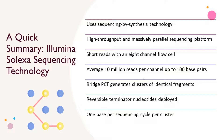Illumina Solexa sequencing technology is deployed in the Illumina Genome Analyzer, a high-throughput, short-read, massively parallel sequencing platform. It uses sequencing by synthesis on an eight-channel flow cell to produce more than 10 million reads per channel with read lengths up to 100 base pairs. Individual fragments of a genomic DNA library are amplified on the flow cell via bridge PCR to generate clusters of identical fragments. Reversible terminator nucleotides are used, allowing the reading of one base per sequencing cycle per cluster.